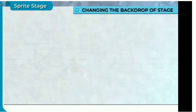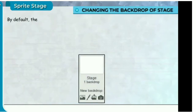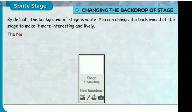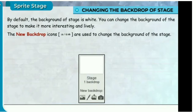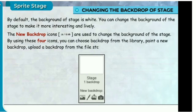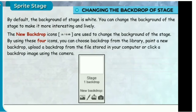Changing the backdrop of the stage. By default the background of the stage is white. You can change the background of the stage to make it more interesting and lively. The new backdrop icons are used to change the background of the stage. Using these four icons, you can choose a backdrop from the library, paint a new backdrop, upload a backdrop from a file stored on your computer, or click a backdrop image using the camera.